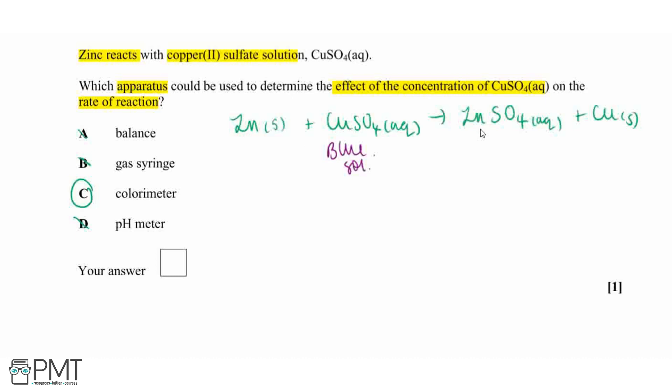Whereas our zinc is not a transition metal. Therefore, the zinc sulfate solution is actually just going to be colorless. So what we will see as this reaction proceeds, we'll see the blue color fading out. Therefore, the colorimeter will be the most appropriate piece of apparatus to determine our effect of concentration.